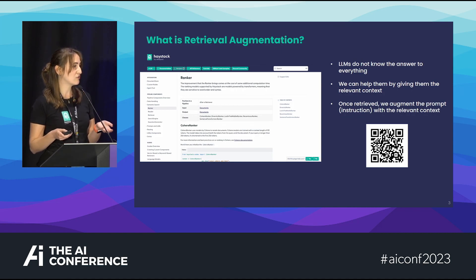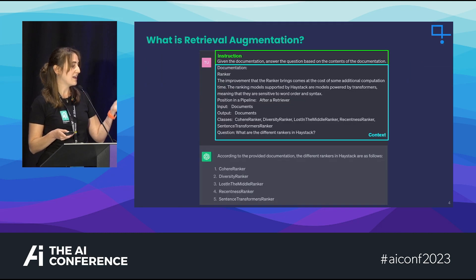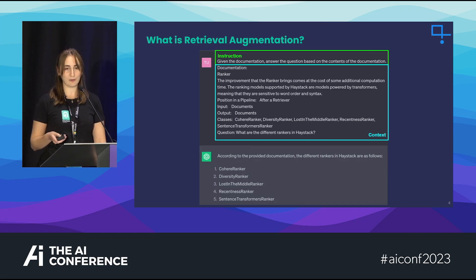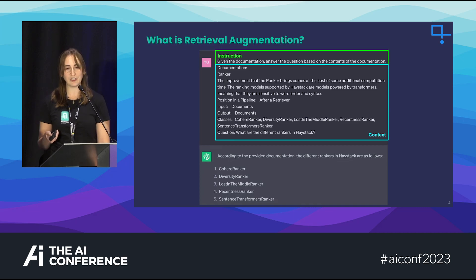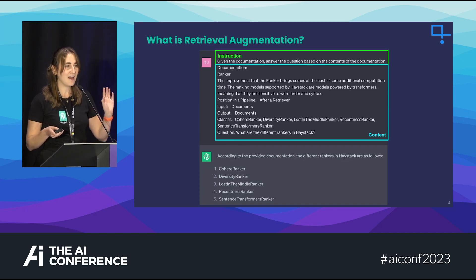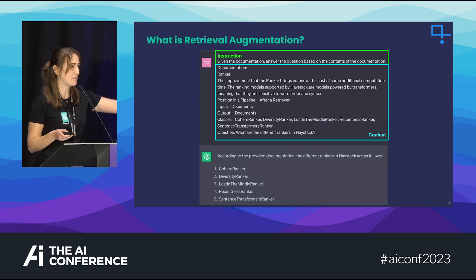The idea behind retrieval augmentation is to augment the instruction we give to a large language model with relevant content — the context — so it can reply in an accurate manner. I've cheated here by pre-processing our documentation page and providing it as context. My instruction reads: given the documentation, answer the question based on its contents. The problem is that if I have pages and pages of documentation, I want a system that can retrieve the relevant parts and embed them into my prompt.